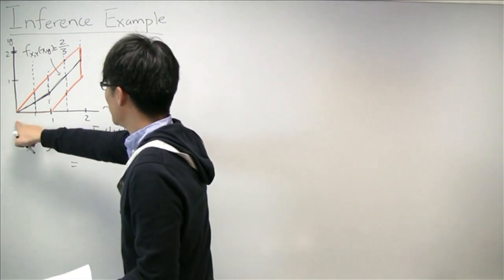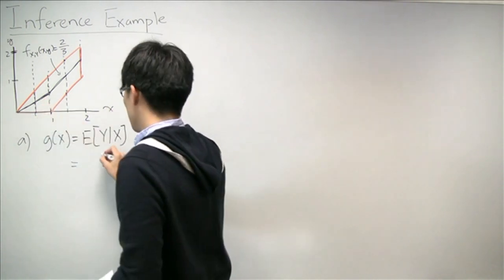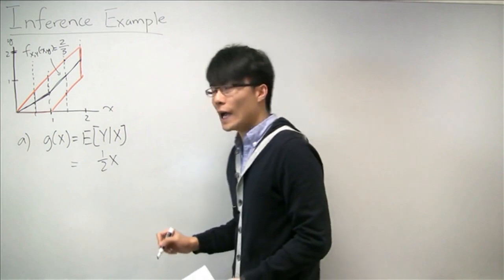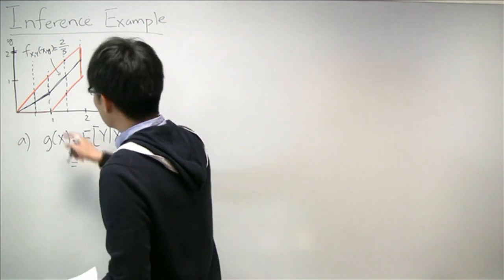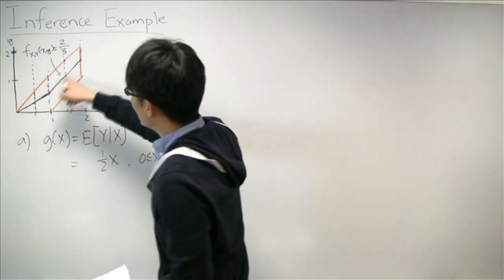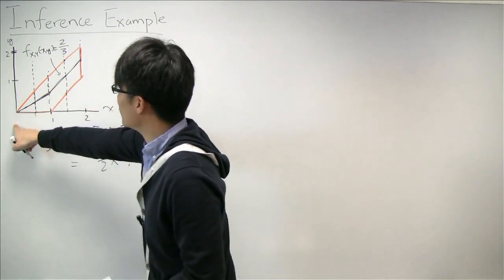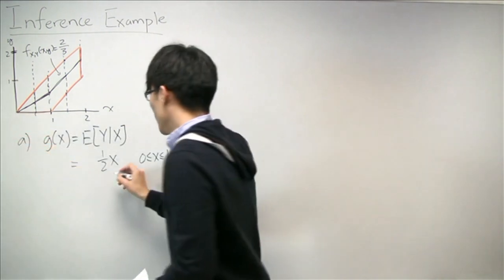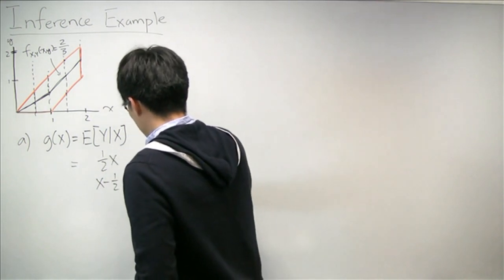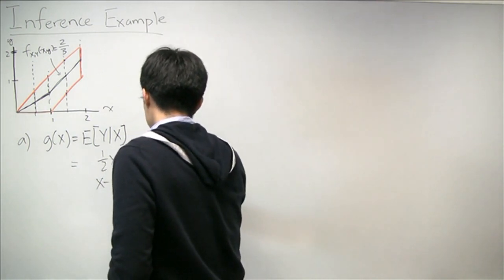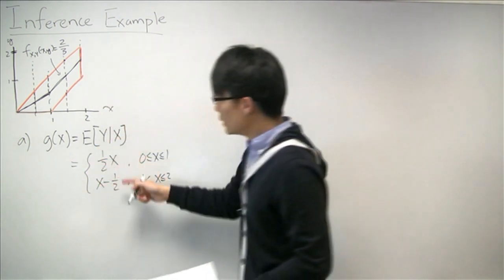By looking at this visually and taking advantage of the fact that everything is uniform, we can pretty easily figure out what this conditional expectation is. Now let's write it out algebraically. For X between 0 and 1, it's just 1/2 · X. For X between 1 and 2, it's a slope of 1 hitting the Y-axis at −1/2, so it's X − 1/2. Otherwise, it's undefined.